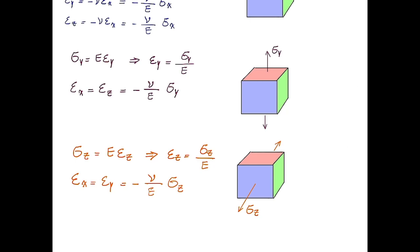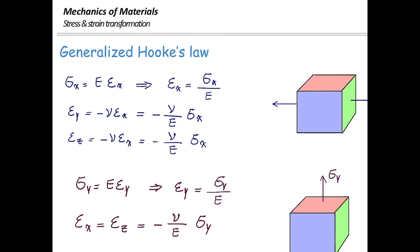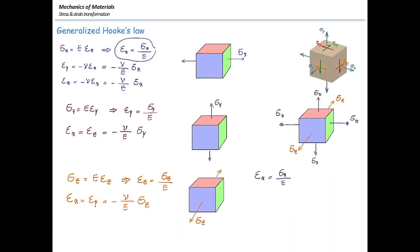Now I want to see what happens if all of these stresses are acting on the element at the same time. How can I combine these stresses together? Let me write down epsilon x from each case. From the first equation, epsilon x was sigma x over E. From the second equation, epsilon x is negative nu over E times sigma y. The last term is epsilon x from the third equation. Simplifying, strain in the x direction is 1 over E multiplied by the quantity sigma x minus nu times (sigma y plus sigma z). That's what we call the generalized Hooke's law.